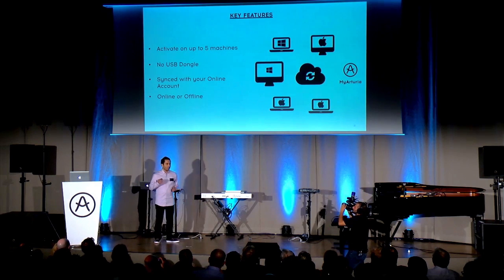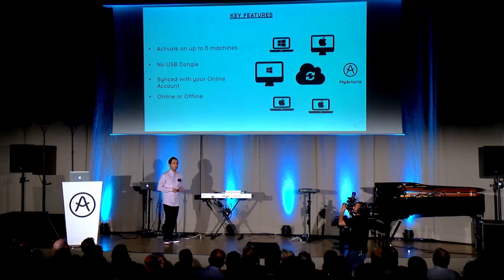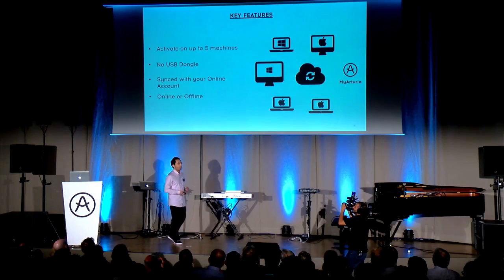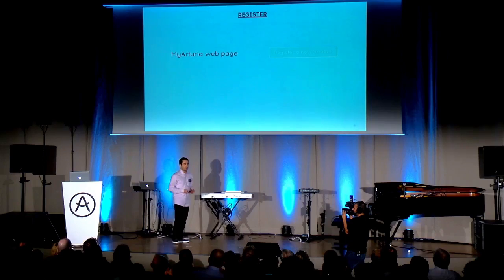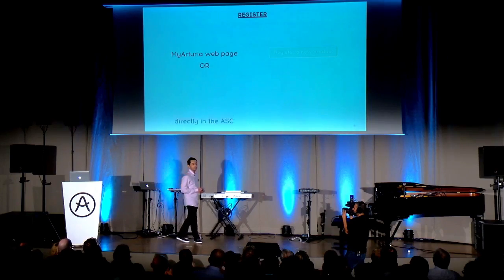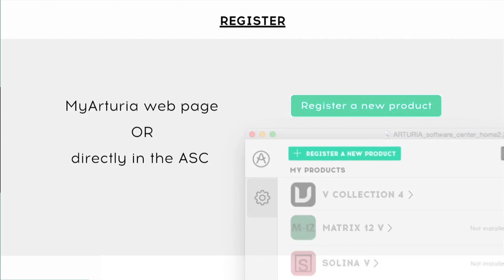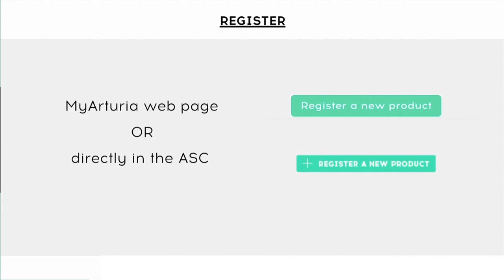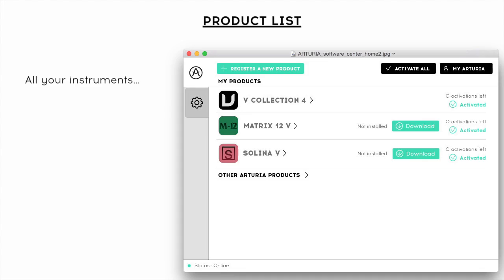Imagine you're a customer — you just bought a product and you're really happy. The first thing you need to do is register it. Just go into the ASC and find the Add Product button. Once you've done that, it will directly appear in your product list.